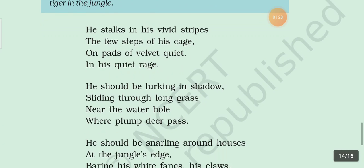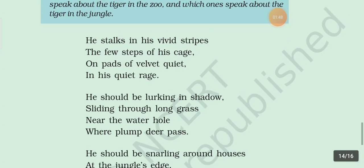In the second stanza: 'He should be lurking in shadow, sliding through long grass near the water hole where plump deer pass.' In this stanza, 'he' is also used for the tiger, so the whole stanza is written in personification figure of speech. In the first line, the S sound is repeated, so alliteration figure of speech is used here.